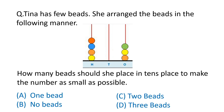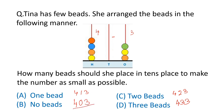Question: Dina arranged beads on an abacus. Hundreds has 4 beads, ones has 3 beads. How many beads in the tens place to make the number as small as possible? With 0 beads in tens it becomes 403; with 1 it's 413; with 2 it's 423; with 3 it's 433. The smallest is 403, so the right answer is option B: 0 beads in the tens place.